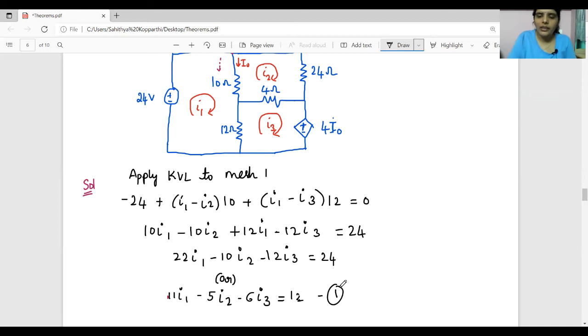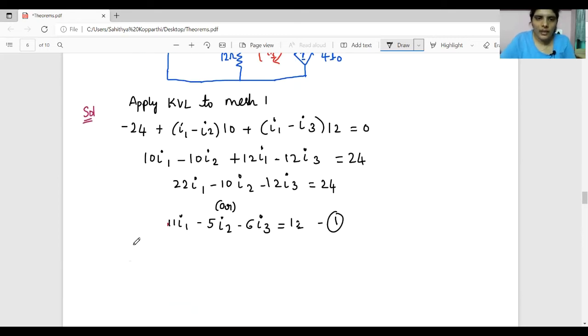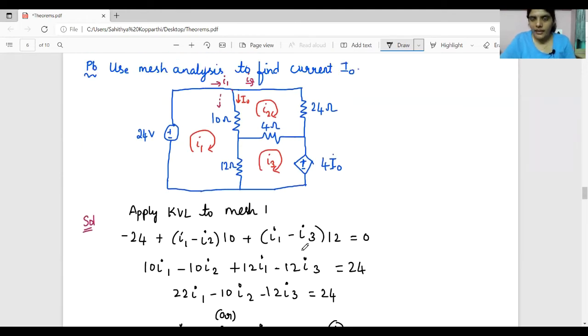Now apply KVL to mesh 2. Going in the clockwise direction, for the 4 ohm resistor you can observe I2 and I3 are flowing in opposite directions, and the magnitude of I2 is considered to be greater than I3 and I1.